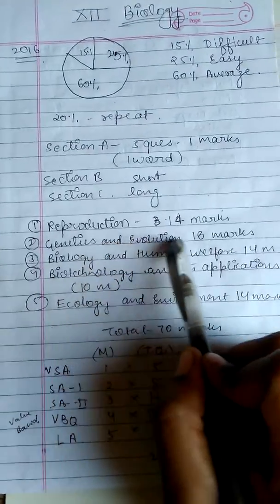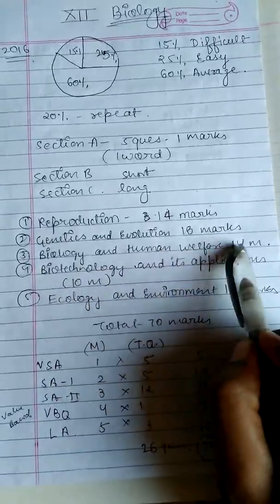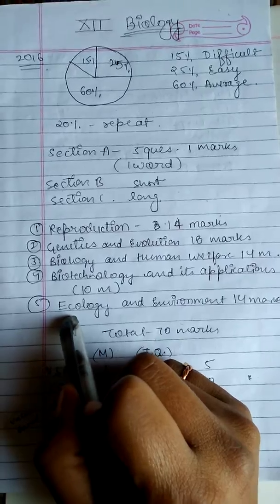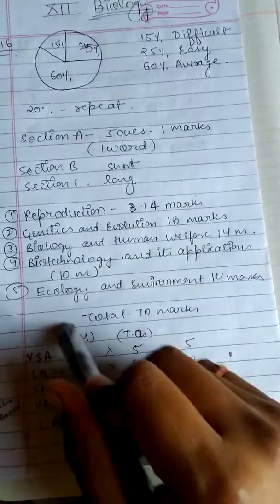Genetics and evolution is of 18 marks. Biology and human welfare is of 14 marks. Biotechnology and application is of 10 marks. And fifth unit is ecology and environment is of 14 marks. Total is 70 marks.